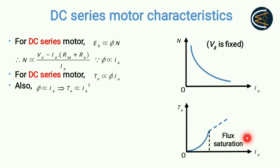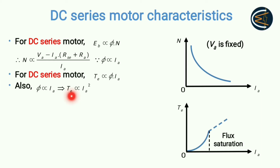However, after some point if flux saturation occurs, this relationship no longer holds, because at flux saturation the flux becomes constant. So we cannot say torque is proportional to Ia²; instead torque becomes directly proportional to Ia itself, and after that point the curve becomes a straight line. This is the full relationship between electromagnetic torque and armature current.